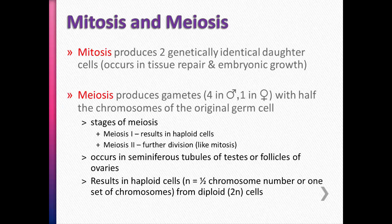Meiosis is only used to produce gametes. In males, from one original germ cell you get four sperm; in females, one original germ cell makes only one egg. Each of those sperm and eggs has half the number of chromosomes. For example, if humans have 46 chromosomes, a sperm has only 23 and an egg has only 23, so when they combine, 23 plus 23 makes 46 — back to the original number.